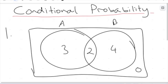Hey everyone, welcome to part two of our conditional probability video. In the previous video, we looked at defining the different spaces on things like Venn diagrams, and exploring what we mean by conditional probability and how this changes a certain sample space when calculating some kind of probability.